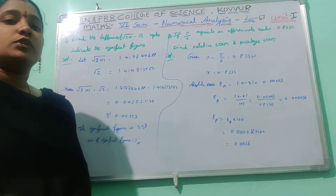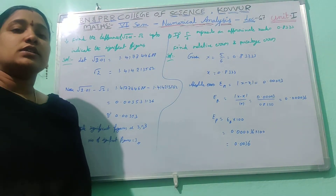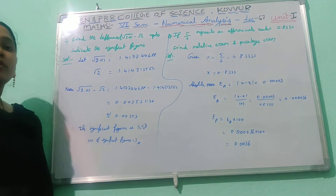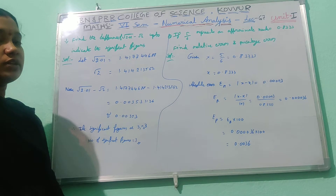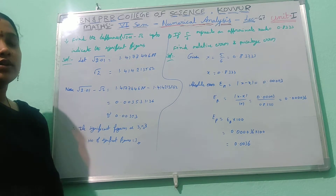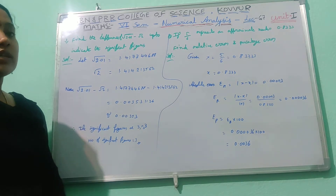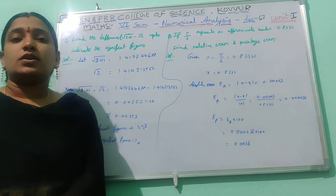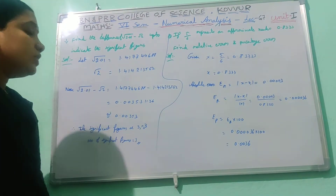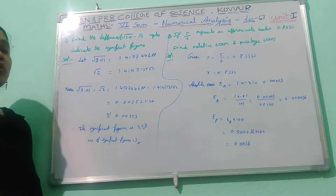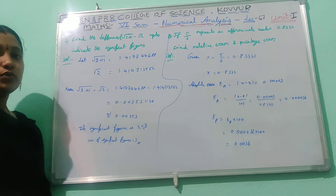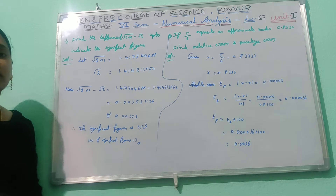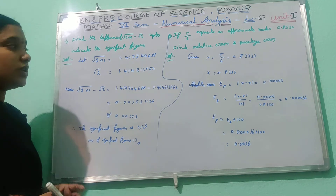Hi students, welcome to AVNBR online classes. In this class, find the difference of root of 2.01 minus root 2 and indicate the significant figures. Second problem: find relative error and percentage error. First problem: find the difference of root of 2.01 minus root 2 and indicate the significant digits or significant figures.